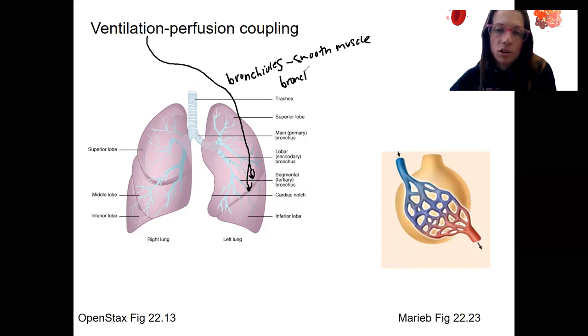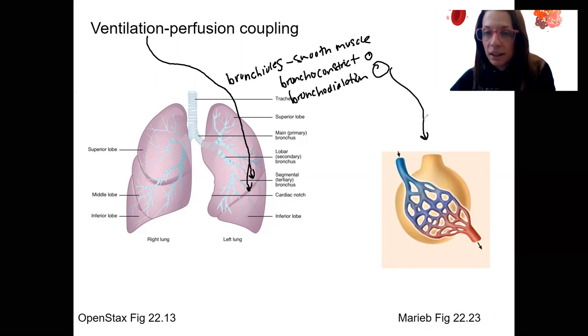So we can have bronchoconstriction to restrict and reduce the size of that airway, the lumen, or bronchodilation, which makes the lumen larger and is going to regulate fresh air entering the alveoli ultimately.